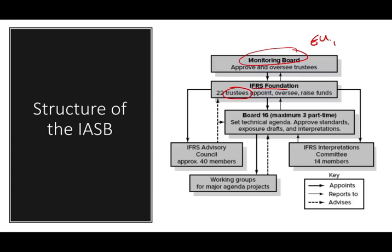The Monitoring Board nominates those trustees and approves the appointments of those trustees. Then we have the IFRS Foundation — the foundation where you have the trustees. We have 22 trustees who are appointed. They oversee the IASB board and raise funds for the board. They represent different geographical areas: six from North America, six from Europe, six from Asia, and four from other countries — six plus six plus six plus four equals 22.